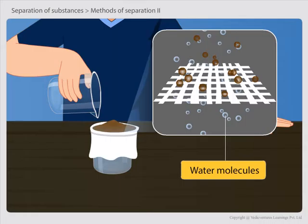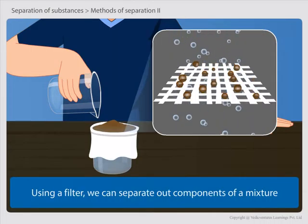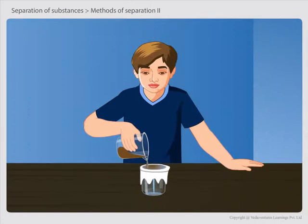The soil particles are bigger in size than these pores, so they cannot pass through these pores and remain in the cloth. While water molecules being smaller than the pore size of the cloth can easily pass through the cloth.